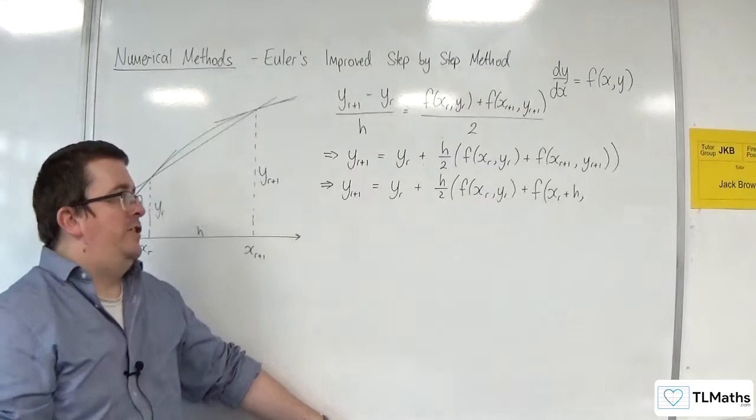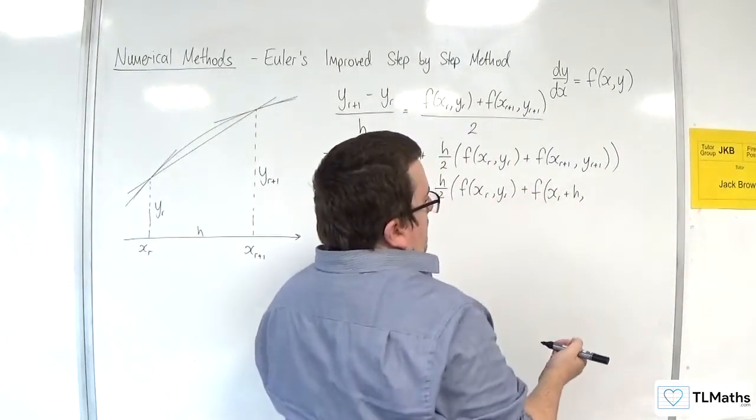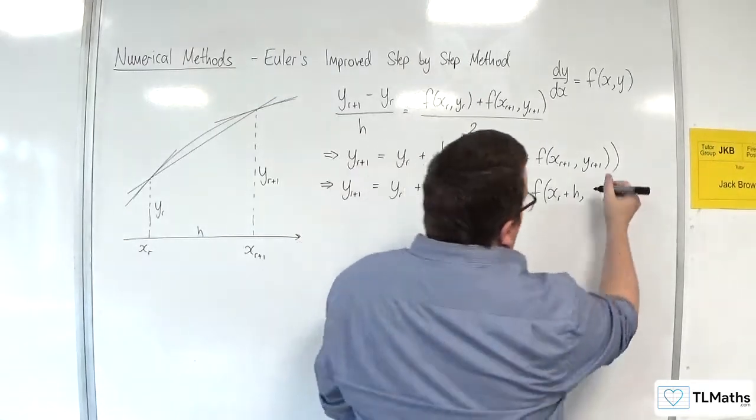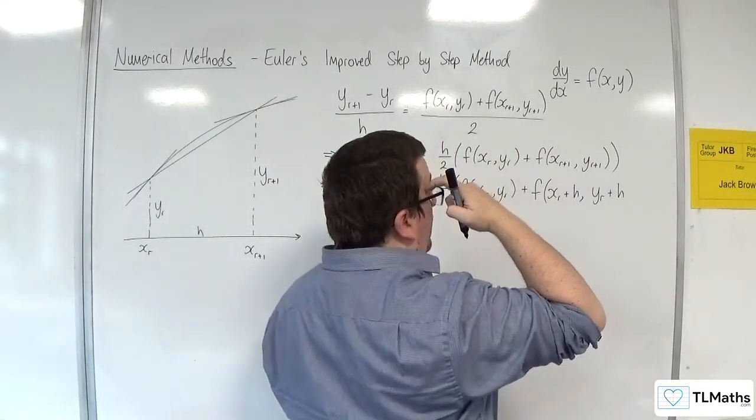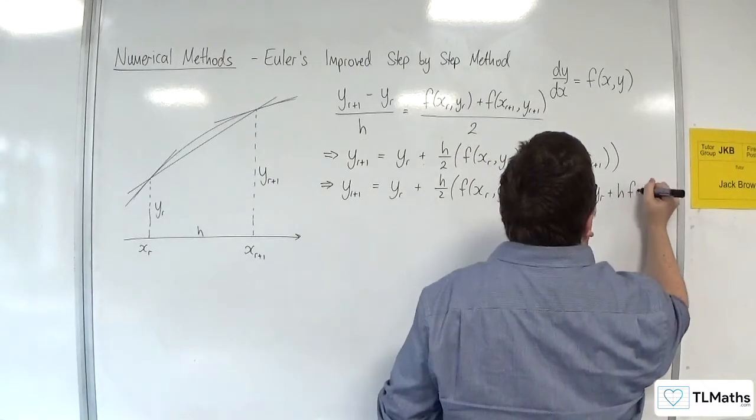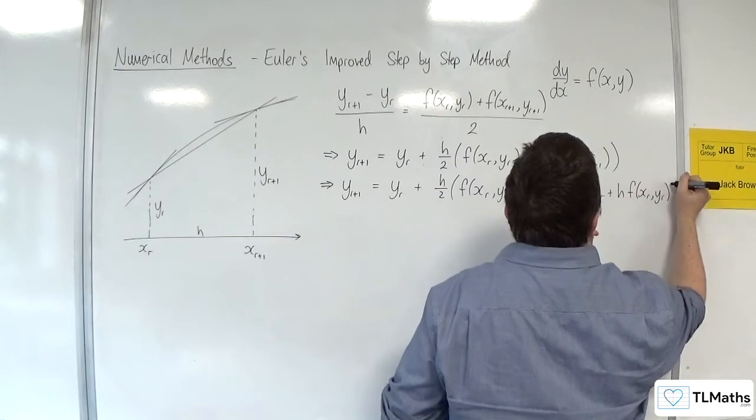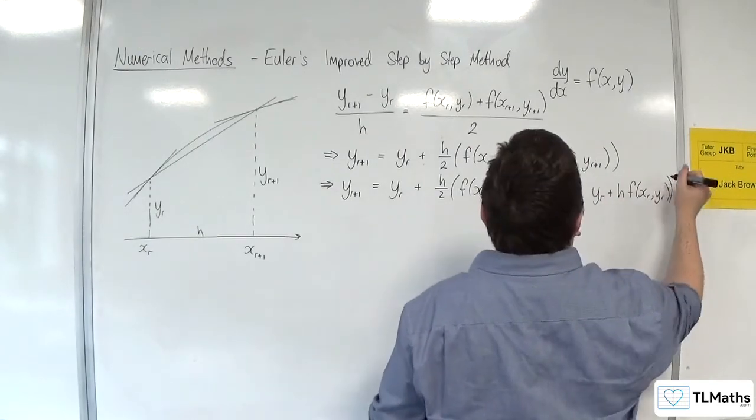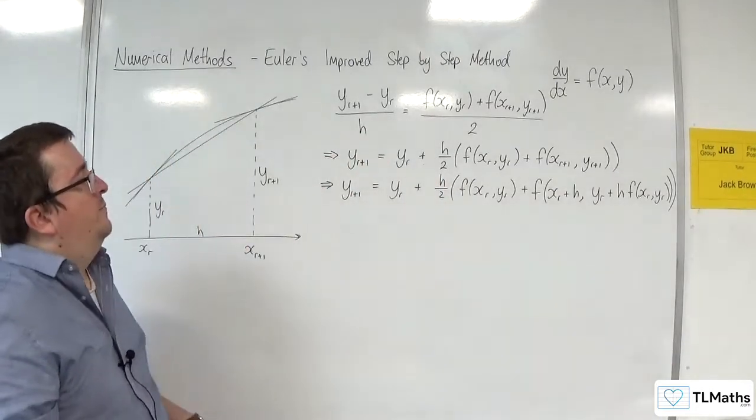The YR plus 1 is YR plus H times F of XR, YR. So, that closes that bracket, and then I've got the other bracket as well.